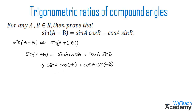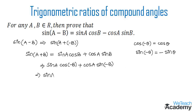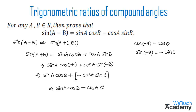Here minus b is a negative angle, and we already know the trigonometric formulas for negative angles: cos(-θ) is equal to cos θ, and sin(-θ) is equal to minus sin θ. So replacing these values, cos(-b) becomes cos b, and sin(-b) becomes minus sin b, giving us minus cos a sin b.